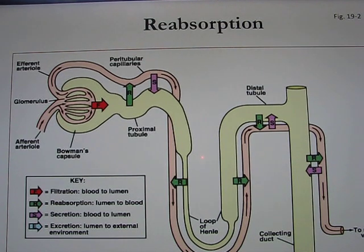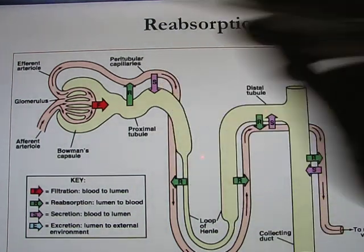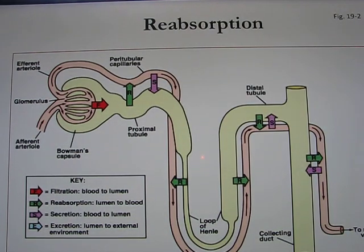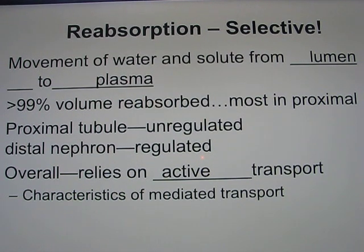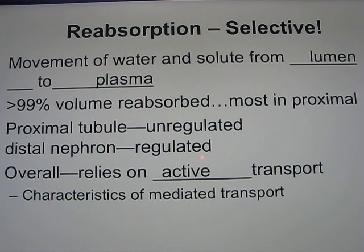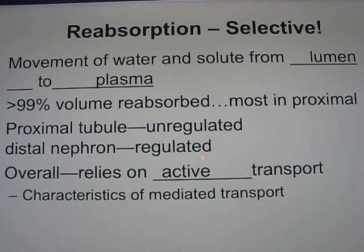We're in the renal process of reabsorption. Reabsorption is from the lumen back into plasma. Over 99% of what's in the lumen will be reabsorbed back, and most of it happens in the proximal tubule. In the proximal tubule, reabsorption is unregulated — you don't need to ask the body whether to take the molecule back, because the answer will always be yes.